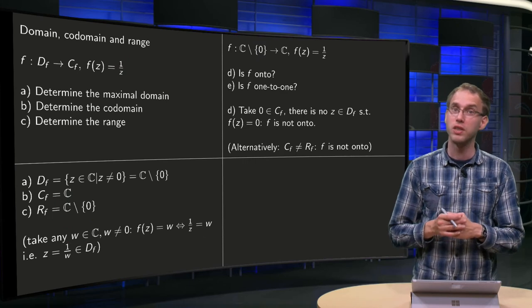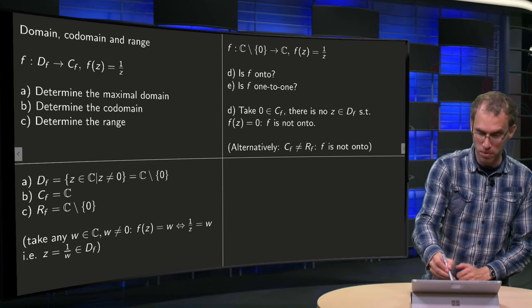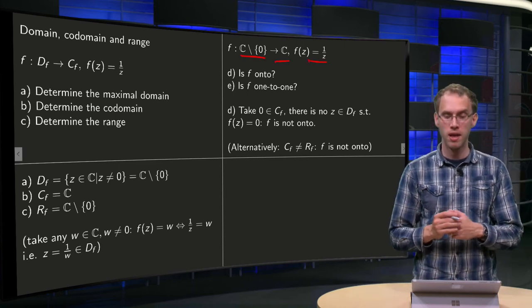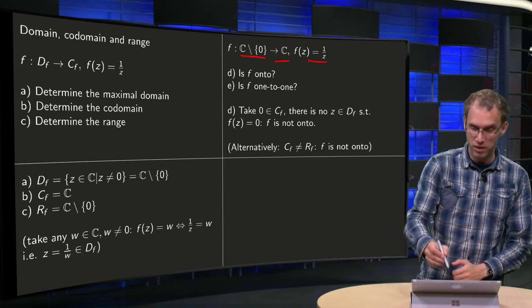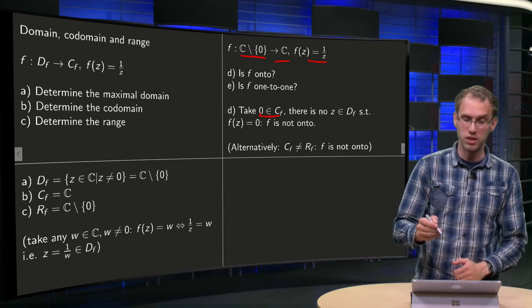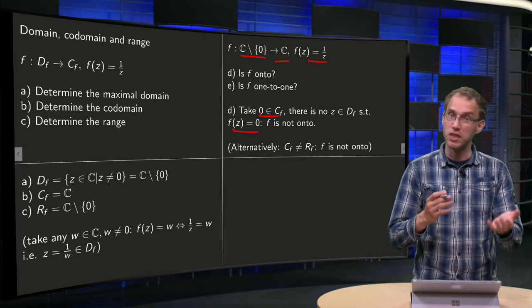And the other questions, is the function f onto and is the function f one-to-one, where we now have chosen the maximal domain and the codomain C and the same function 1 over z. So is the function f onto? Well, if you take 0 in the codomain, there is no z such that this 0 can be reached, so there is no z such that f equals 0.